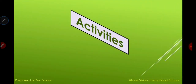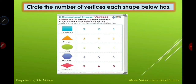Let's have some activities. We are going to circle the number of vertices each shape has. Let's see the choices and circle the correct one. The first shape is a rectangle. Let's circle the vertices — the corner — and count: one, two, three, four. So what is the answer: four, zero, or one? Good job, it's four!